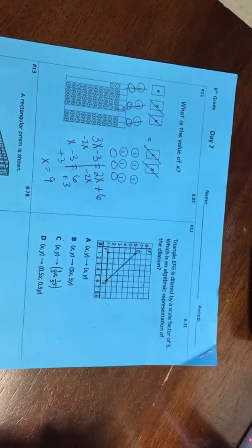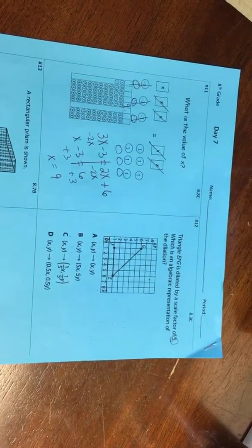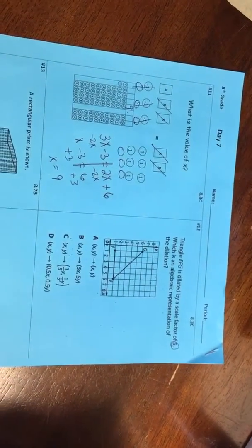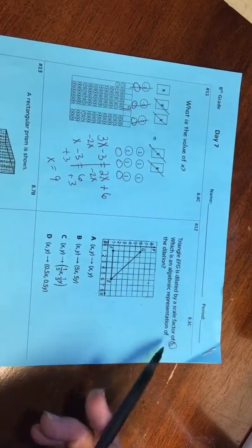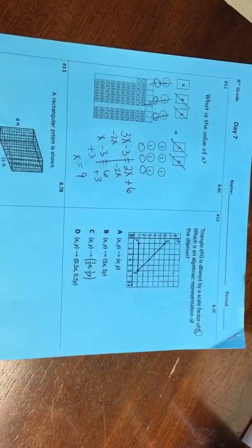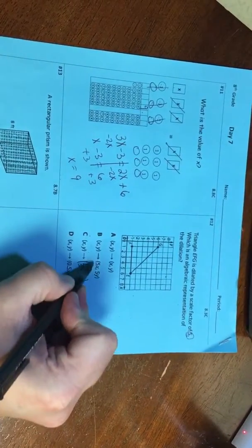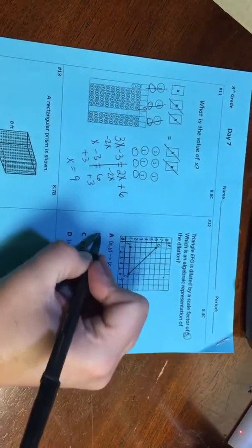All right, number 12. Triangle EFG is dilated by a scale factor of 5, which is an algebraic representation of this dilation. All you have to do, literally, is put the 5 in front of the X and the Y. So if our scale factor is 5, I start off with normal XY, I'm changing it by multiplying each of them by 5. That's it.